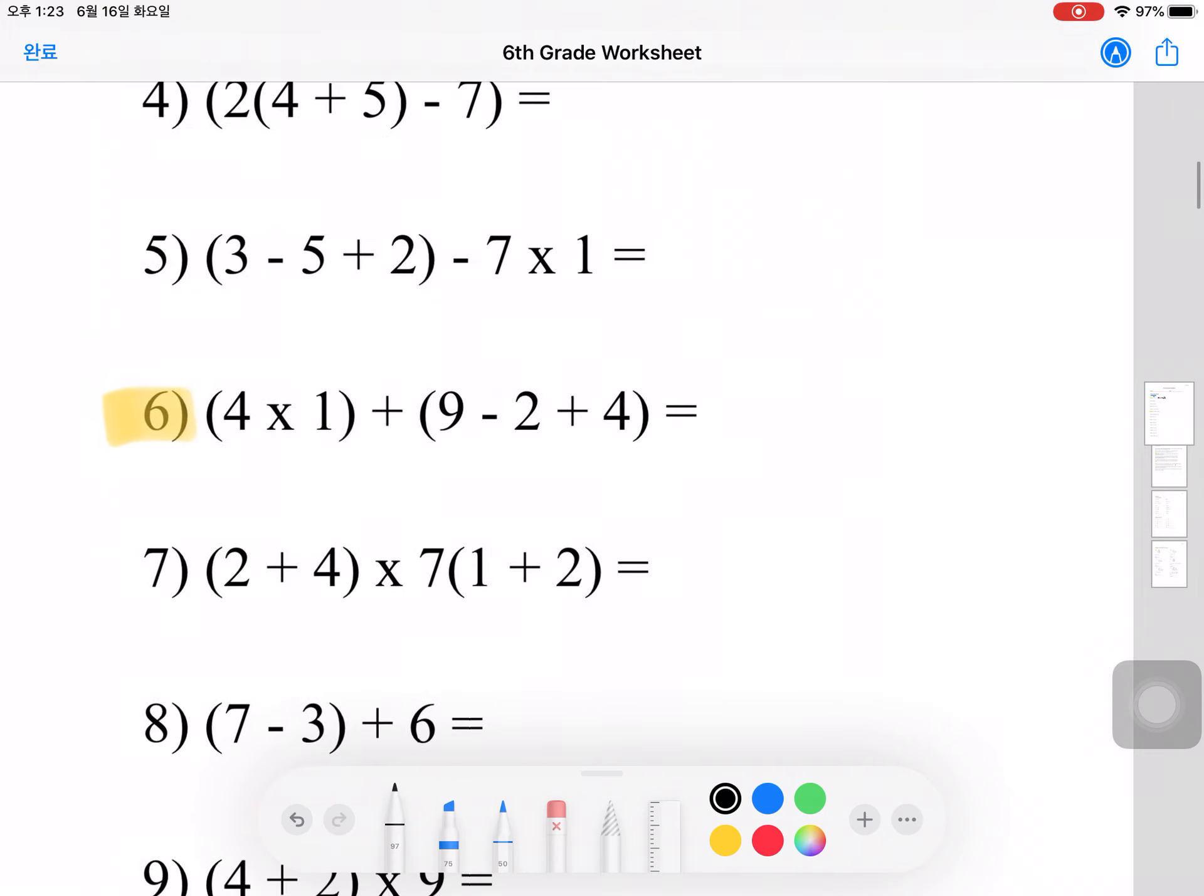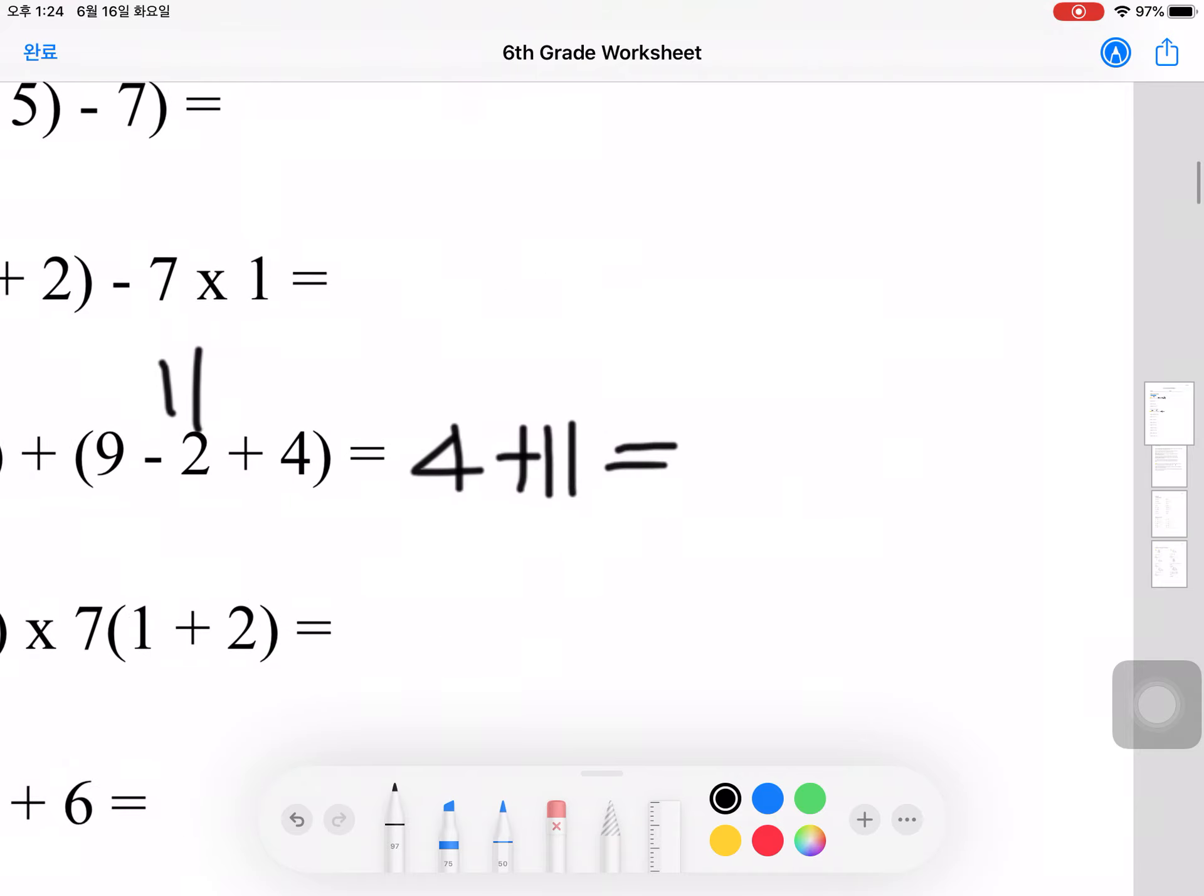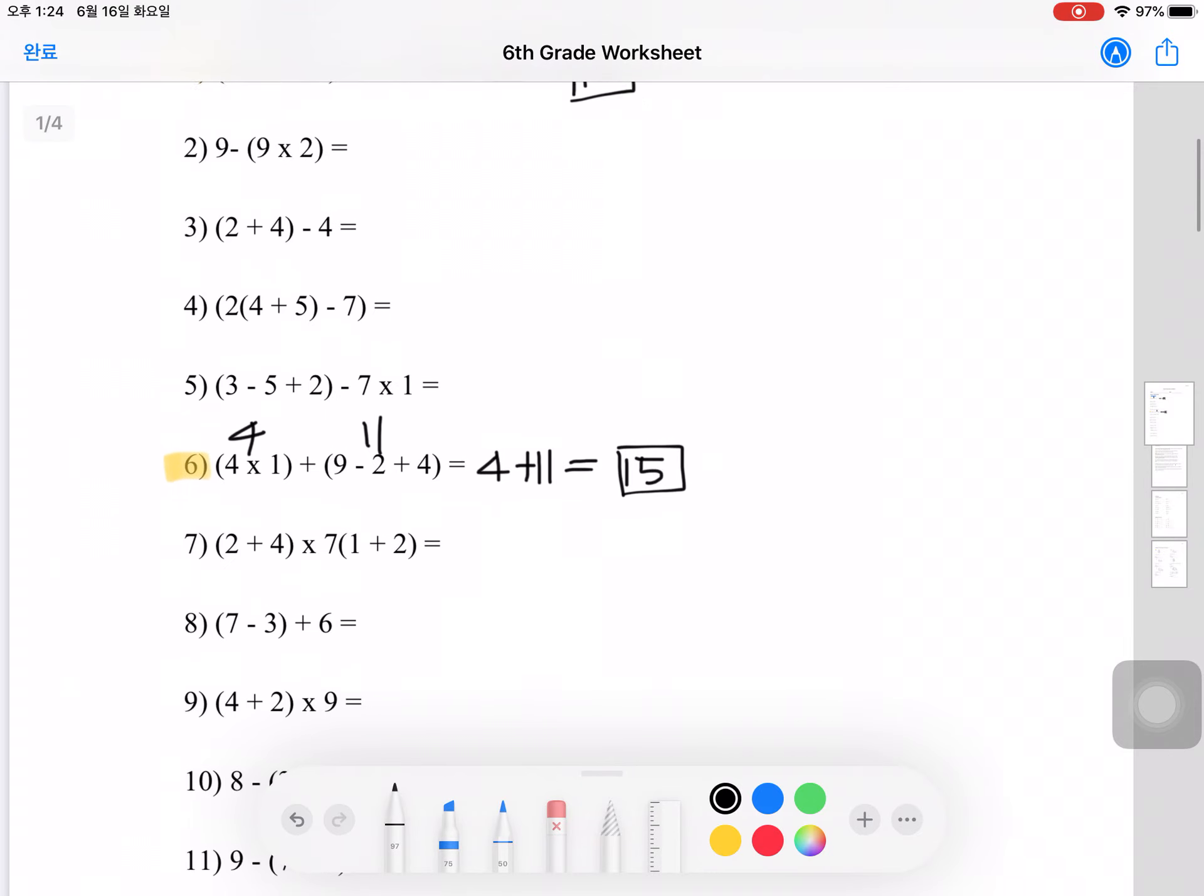Let's try number 6. This one's a little harder. We have two sets of parentheses. One is 4 times 1, and the other is 9 minus 2 plus 4. So 4 times 1 is 4. 9 minus 2 is 7, plus 4 is 11. If we add these two, your final answer would be 15. Pretty easy, right?